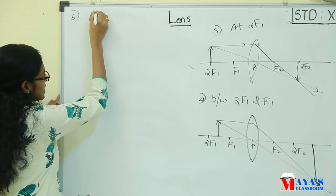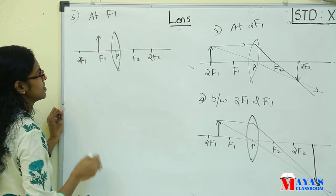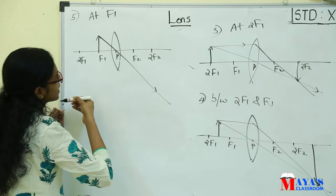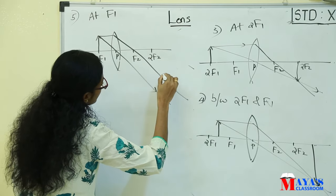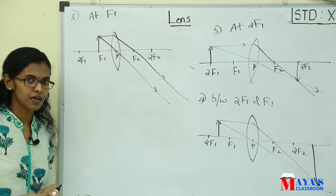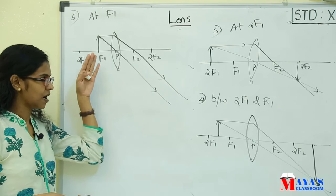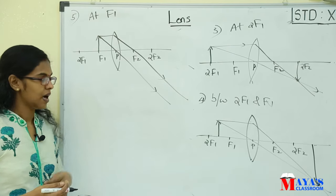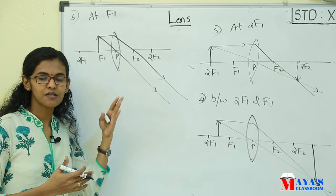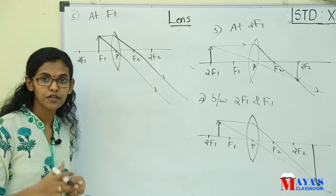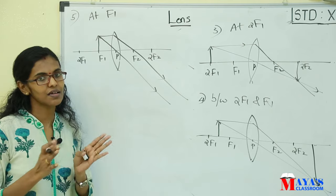The fifth condition: the object is at F1. First rule: ray through the optic center. Second rule: parallel ray — after refraction, the parallel ray passes. Since the object is at F1, the refracted rays are parallel and do not converge. The image is formed at infinity. The image is real and inverted.